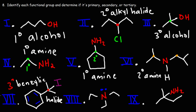Looking at the next one, this nitrogen is attached to three carbon atoms, so that makes this a tertiary amine. For the last one, the NH2 group is only attached to one carbon. Even though that carbon may be tertiary, because the nitrogen is attached to only one carbon atom, we have a primary amine.